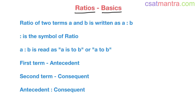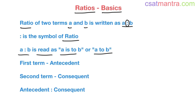Say two terms or two quantities A and B are given. Then their ratio is written as A ratio B. This is the symbol of ratio, and A ratio B is read as A is to B, or A to B.